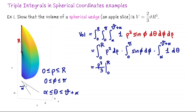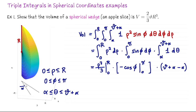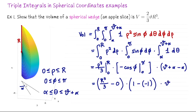Anti-differentiating each: the first gives rho cubed divided by 3, evaluated at R, which is R cubed over 3. The second has antiderivative negative cosine phi, giving negative cosine pi minus negative cosine zero, which equals 1 minus (−1) = 2. The third is integrating 1, giving the width of the interval: slice angle plus alpha minus alpha — so rotation by alpha cancels. Putting it all together: (R³/3) times 2 times the slice angle = two-thirds times the angle times the radius cubed.